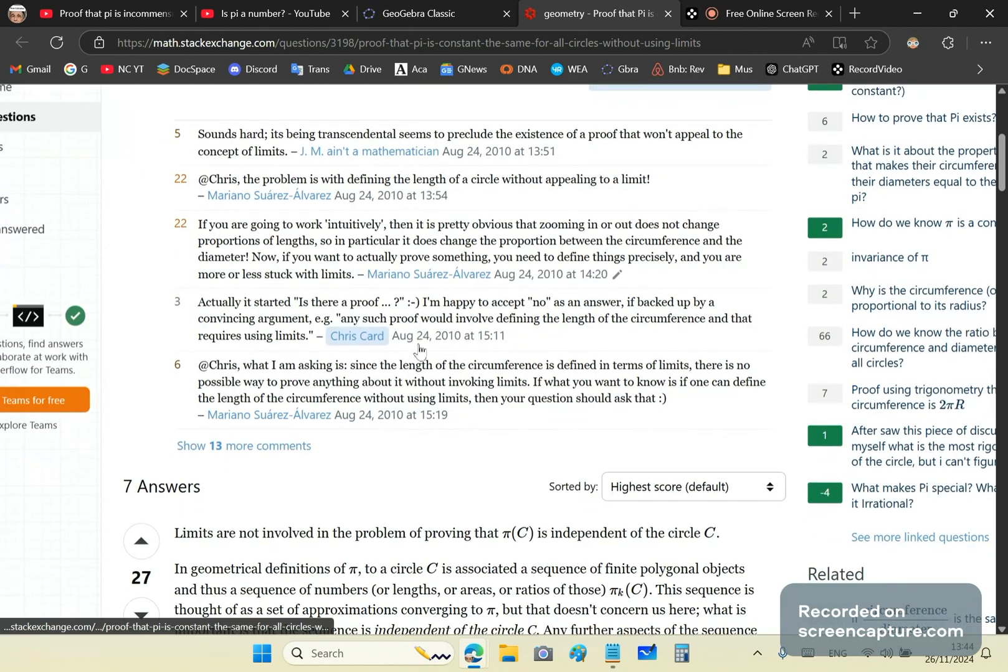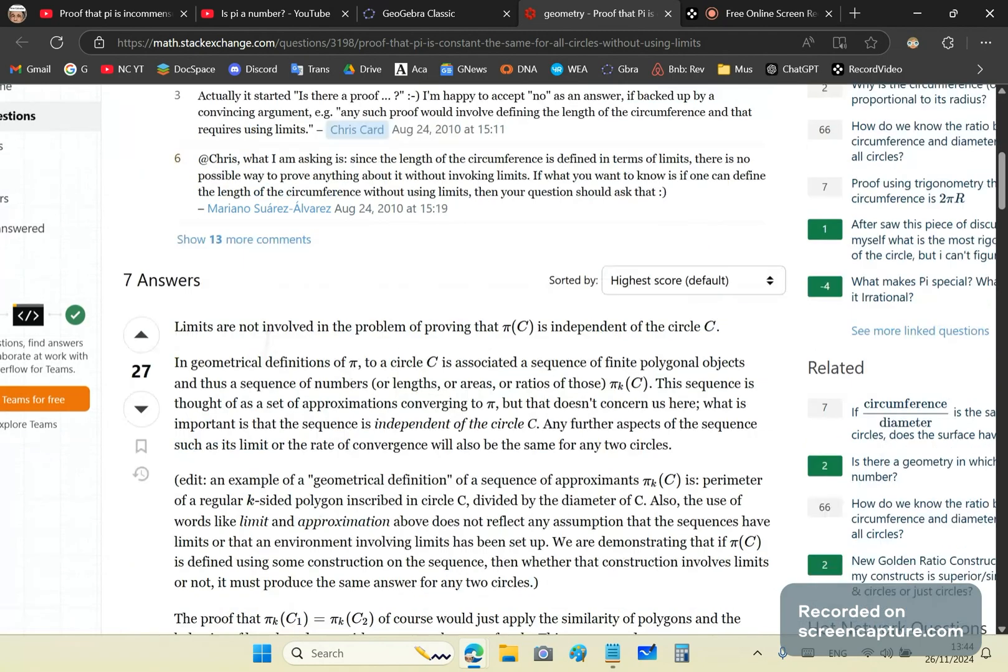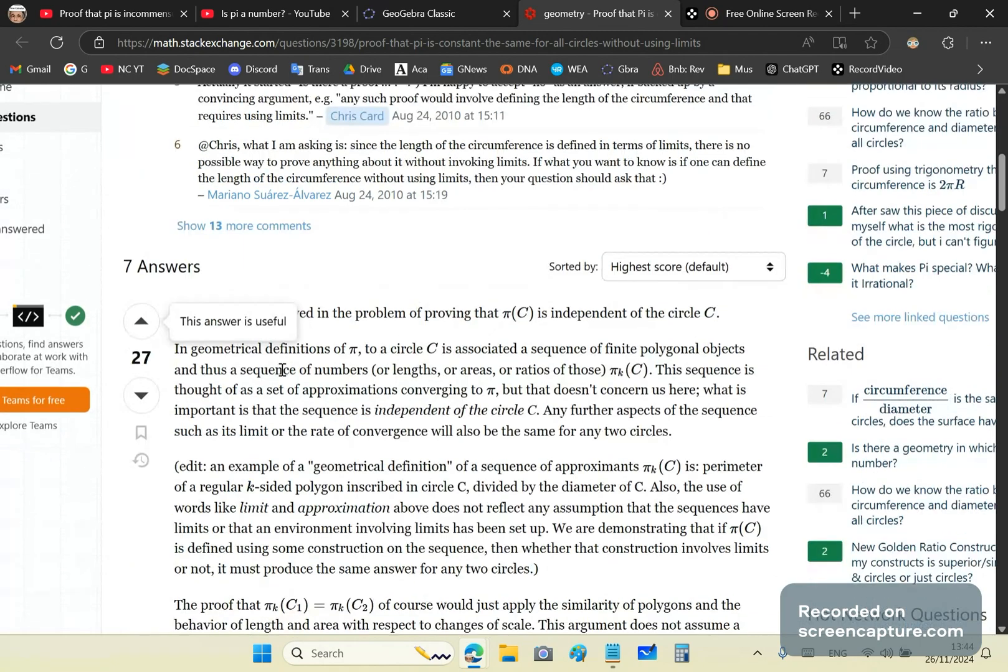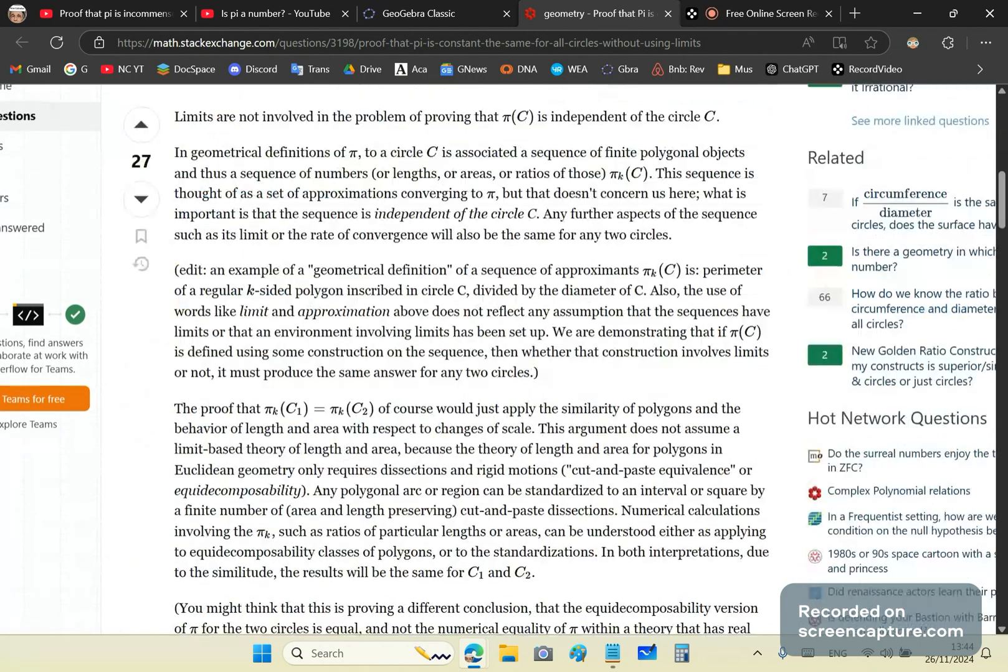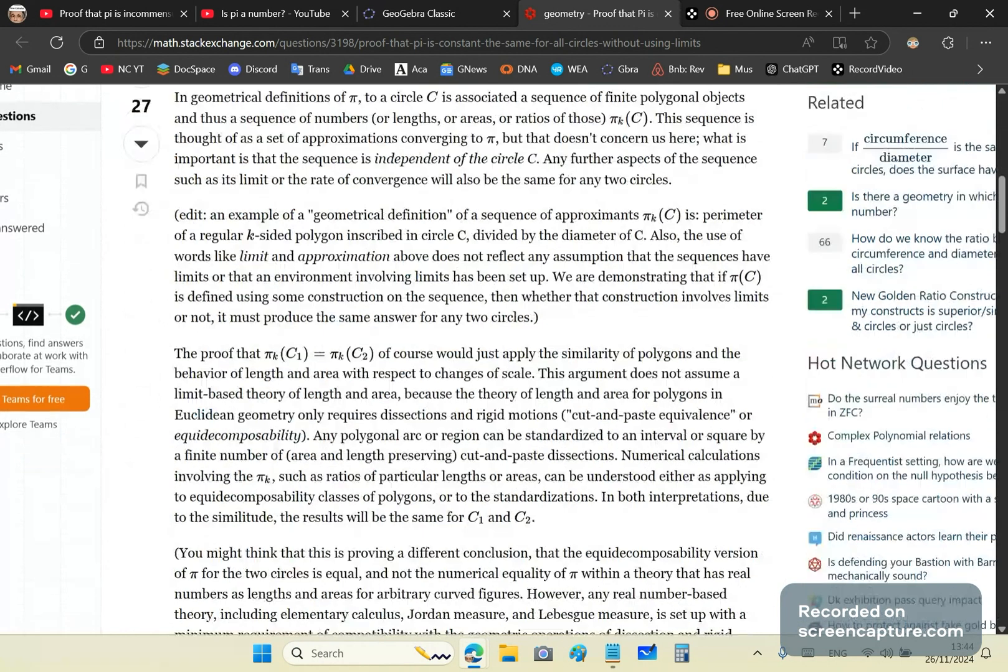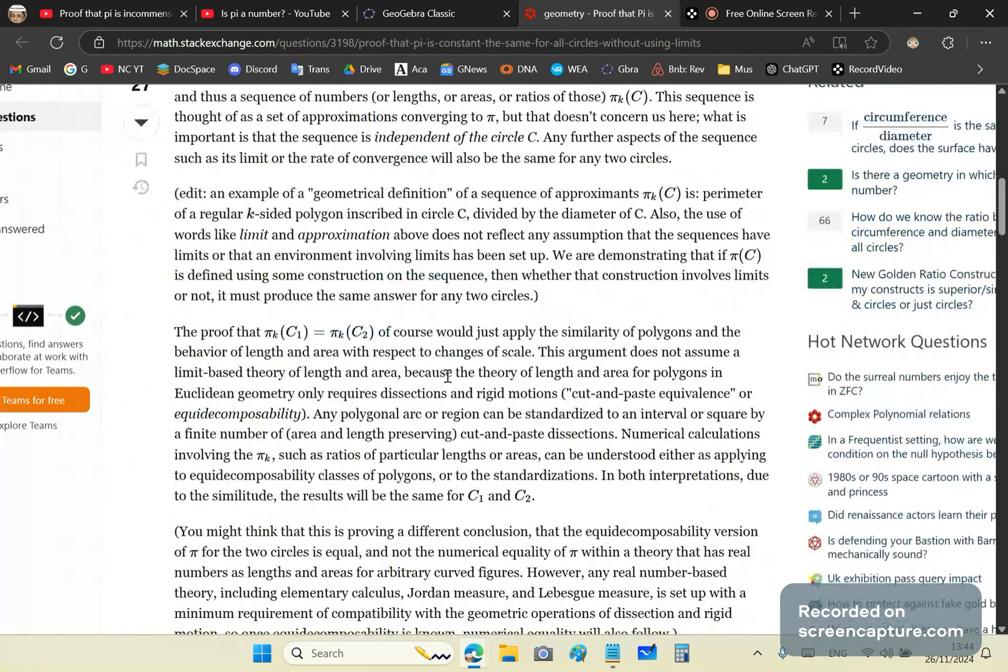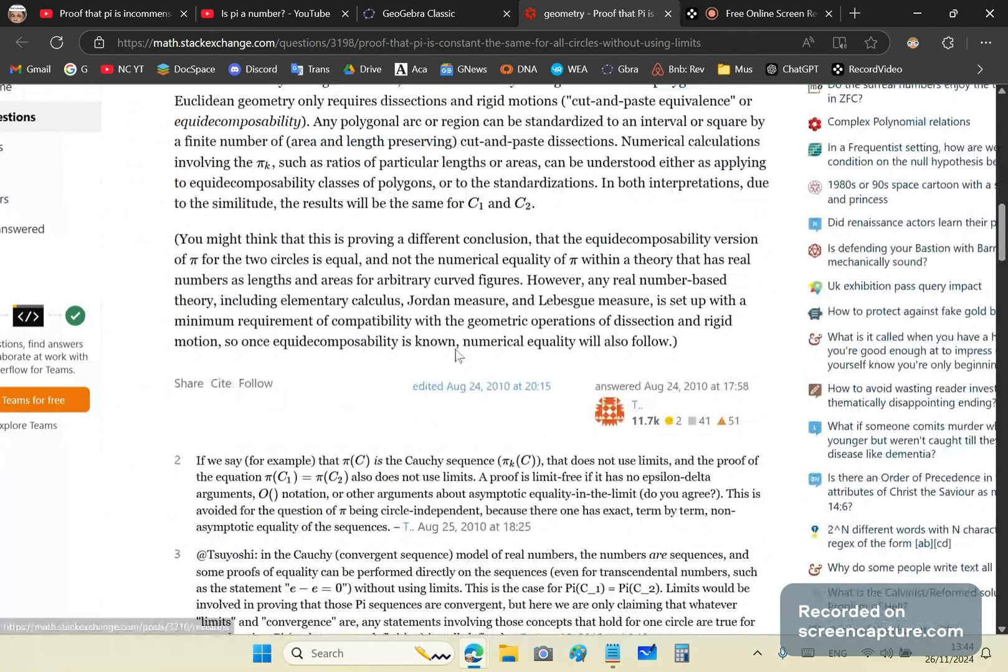All of them are a bunch of morons. And then this guy pops up here who's got a rank of 27, and he goes into a long rant and a dissertation about why it's constant. It's also garbage. And he comes up with things like, however, any real number base area, including elementary calculus, Jordan measure, Lebesgue measure, is set up with a minimum requirement or compatibility with the geometric operations of dissection and rigid motion.